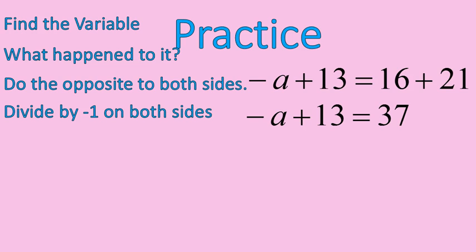Welcome back. The first thing to do with an equation like this is to simplify the right side of the equation. 16 plus 21 is 37. Let's make it as simple as possible. We're already working with complicated ideas. Let's not make it any worse.